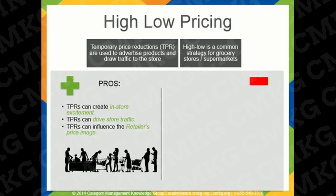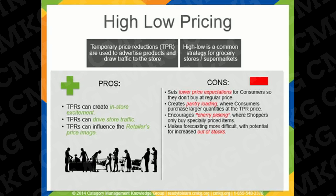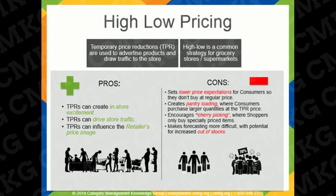High-low pricing can drive both in-store excitement and traffic, with shoppers coming to the store specifically to purchase temporarily priced products. It can also influence the retailer's overall price image. However, high-low pricing also has cons. TPRs can establish price point expectations for consumers so they won't purchase the product at regular price. They can also cause shoppers to pantry load, purchasing large quantities that keep them away from buying the product again for a longer period of time. TPRs can also encourage cherry-picking, where shoppers only purchase specially priced items. Finally, high-low pricing makes forecasting much more difficult for both retailers and vendors due to the variances in incremental sales when on TPR, and these volume surges can lead to out-of-stocks.